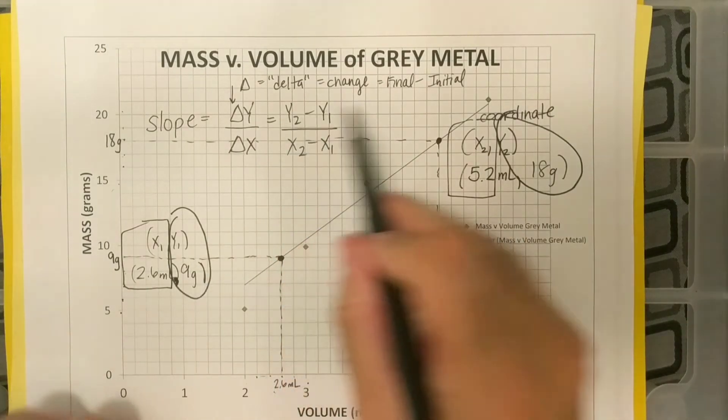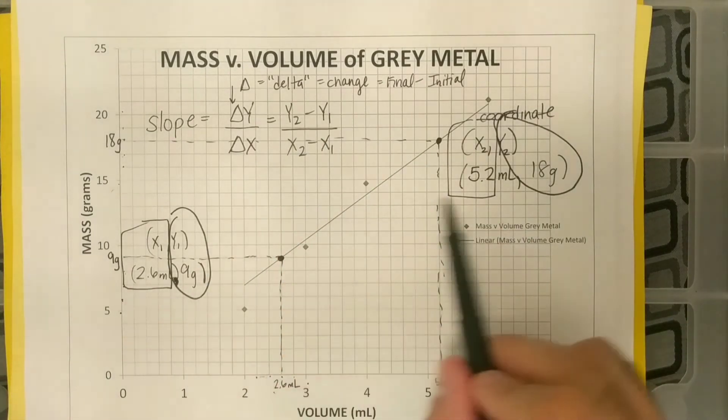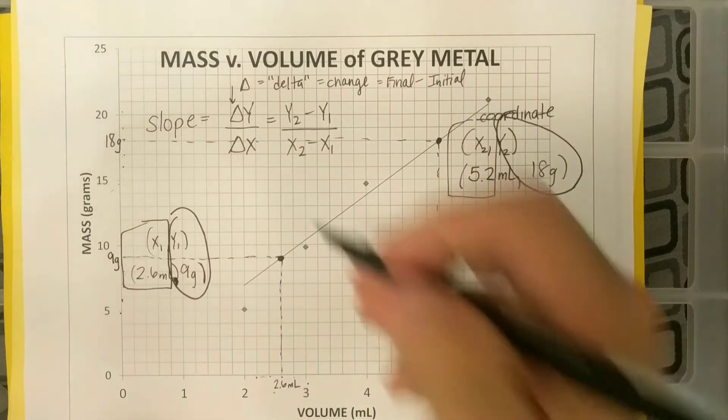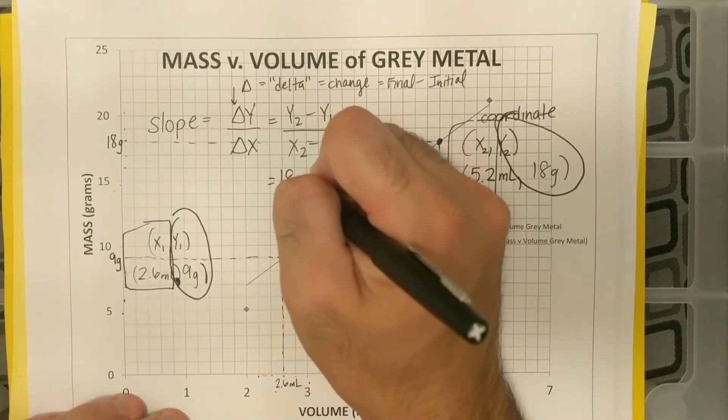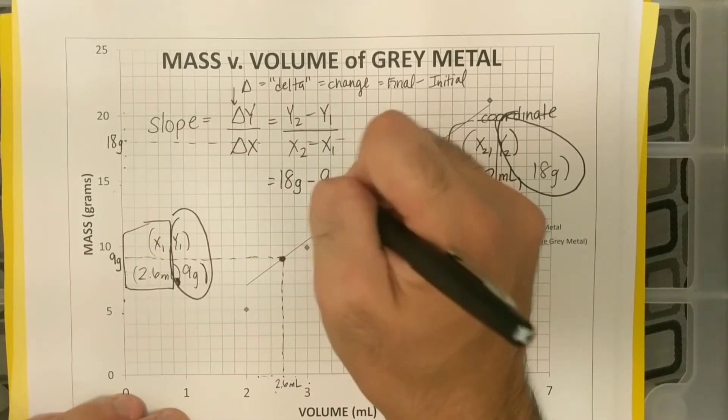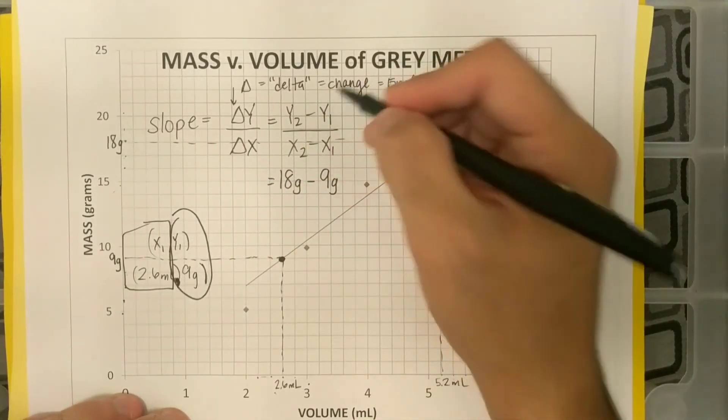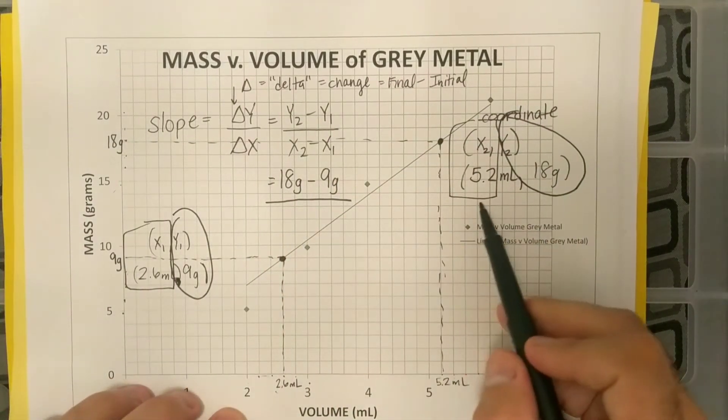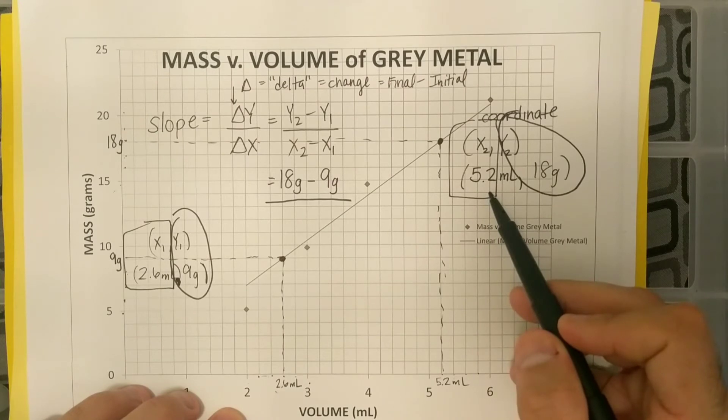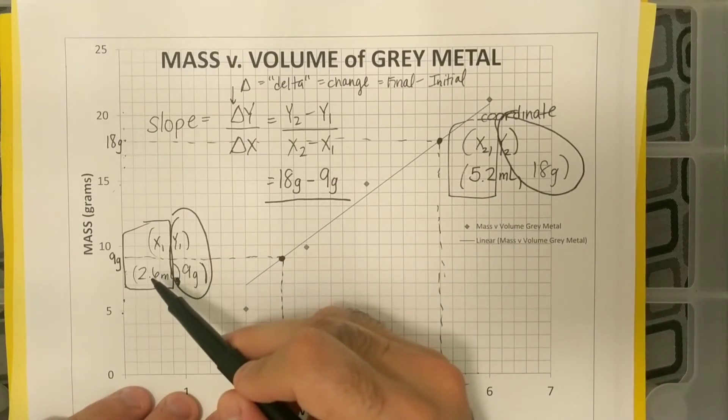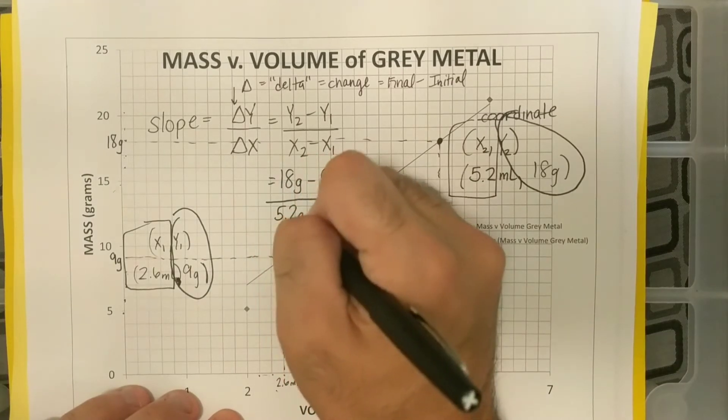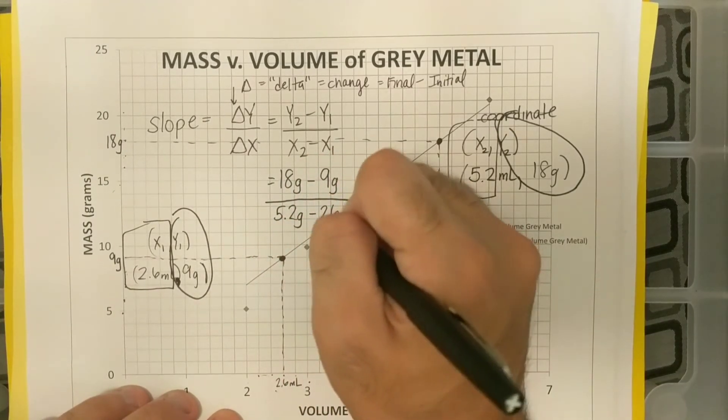And so my y2 minus y1 are my circles. Y2 for me was 18, and y1 was 9, so I'm going to plug that in. 18 grams minus 9 grams. That's on my top. Then I'm going to put my x2 over x1. My x2 I labeled as 5.2, and my x1 I labeled as 2.6. So 5.2 grams minus 2.6 grams.